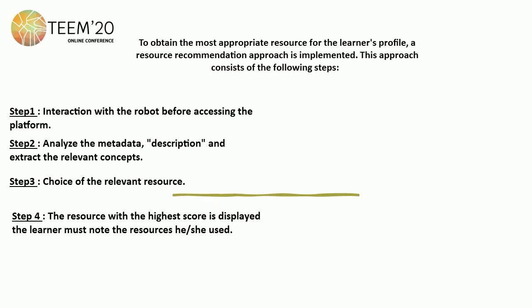The approach consists of the following steps. Step one: interaction with the robot before accessing the platform. Step two: analyze the metadata description and extract the relevant concepts, which contain the key concepts related to the resource. Step three: choose the relevant resource — after calculating the similarity between the learner concepts and all resources, the resource with the highest score is displayed. Step four: the goal is reached, and the learner must know the resource he or she uses.